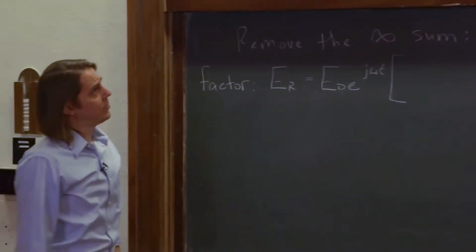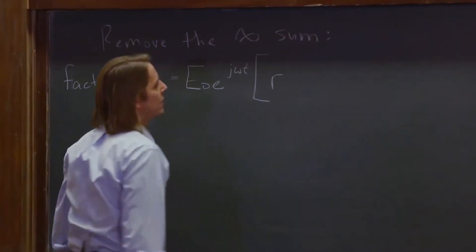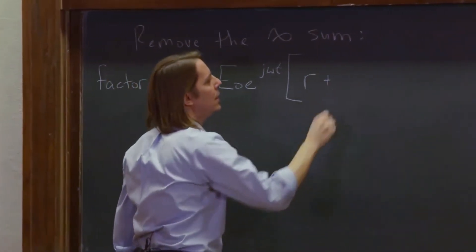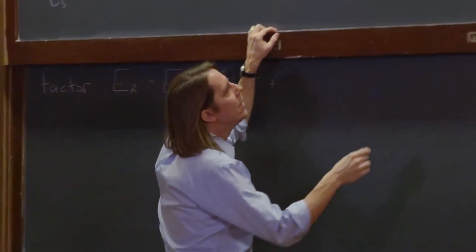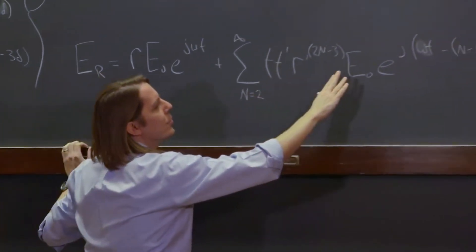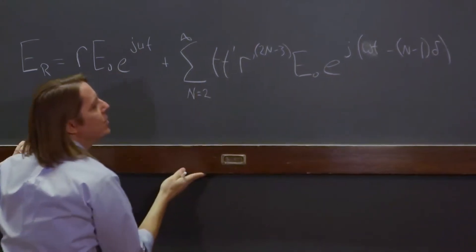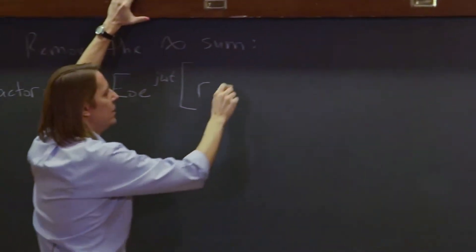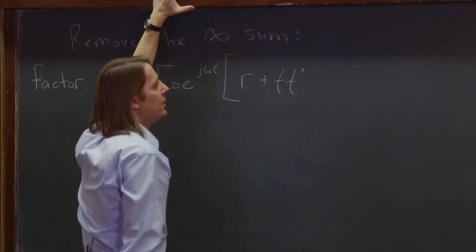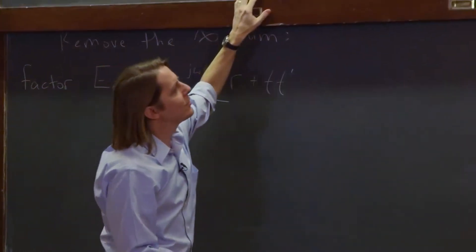And we still have an R. And plus. And as long as we're factoring, we can pull out things here that don't involve N. We can pull out the T, T prime. E to the J omega T is gone. And is there anything else we can pull out?